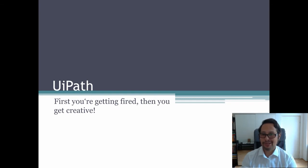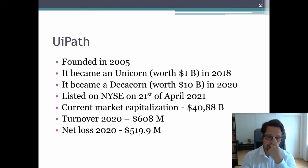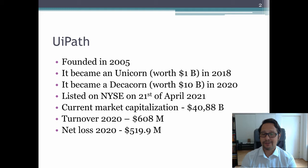The company was founded in 2005. It became a unicorn — worth more than one billion dollars — in 2018, after 13 years of development and several financing rounds. Then it became a decacorn — worth more than ten billion — in 2020, multiplying its value tenfold in just two years. As of April 21, 2021, it listed on the New York Stock Exchange — exactly one month ago as we are on May 21. The current market capitalization is 40 to 41 billion dollars.